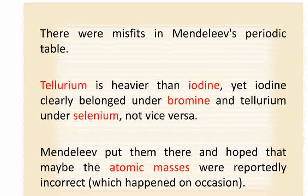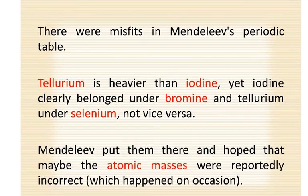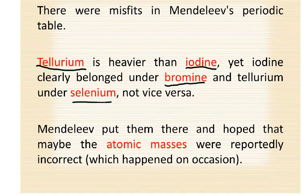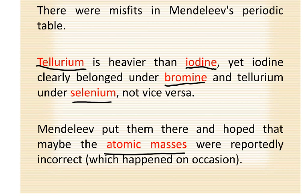Now there were misfits. Tellurium is heavier than iodine, yet iodine clearly belonged under bromine and tellurium under selenium, not vice versa. Mendeleev put them there and hoped that maybe the atomic masses were reportedly incorrect, which happened on occasion. What they obviously didn't know about were the number of protons — atomic number. So once those were discovered, it confirmed that Mendeleev was right: iodine does belong under bromine and tellurium does belong under selenium by way of number of protons.